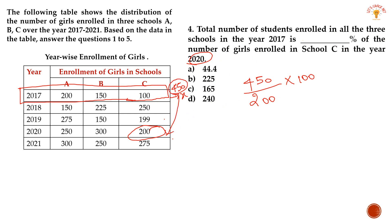If you compare it, in 200 this is the percentage, in 450 this is the percentage. If we cancel it — this is one time, this goes five times — the answer will be 225 percentage.